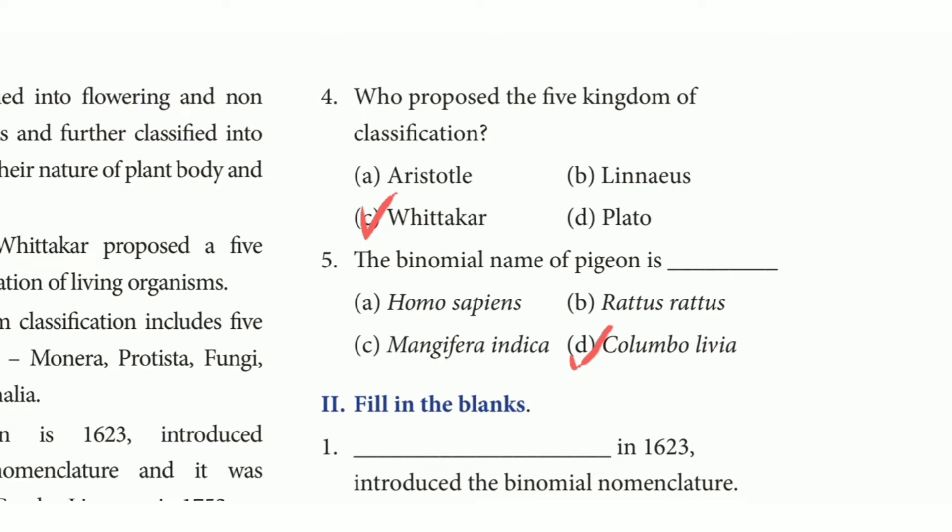Fourth question: who proposed the five-kingdom classification? The answer is option C, Whittaker. Fifth question: the binomial name of the pigeon is blank. The answer is option D, Columba livia.